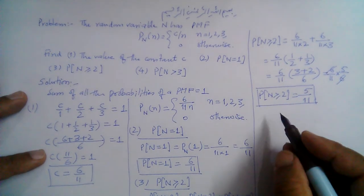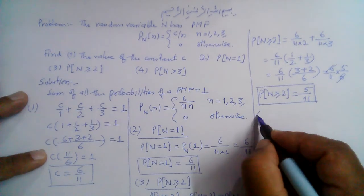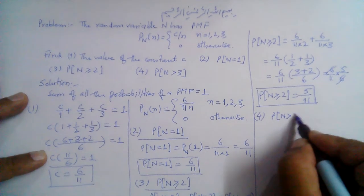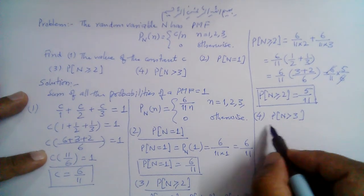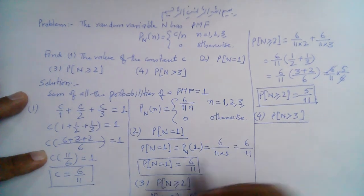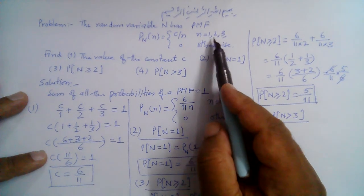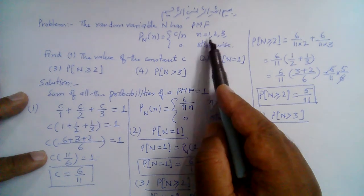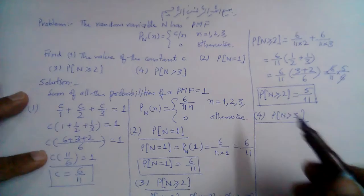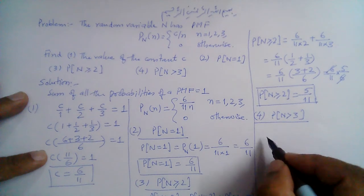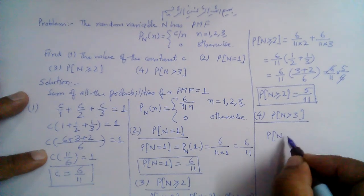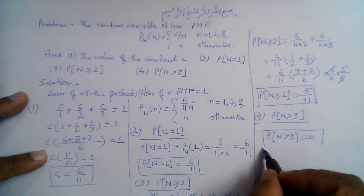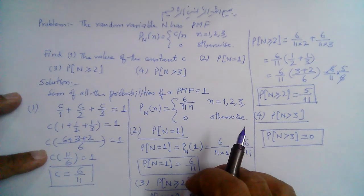For part 4, the probability that N is greater than 3. Since N can only take on values 1, 2, and 3, for any value greater than 3 the probability is 0. Therefore P(N > 3) = 0. This concludes the solution to the given problem.